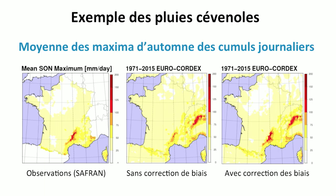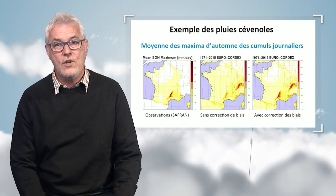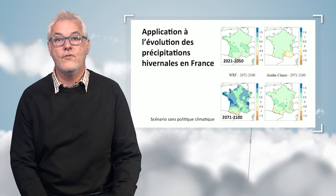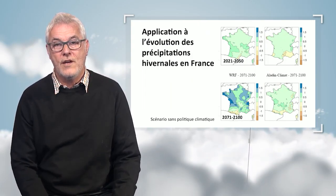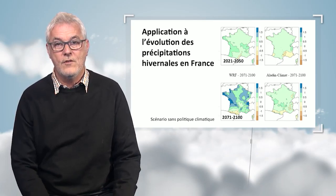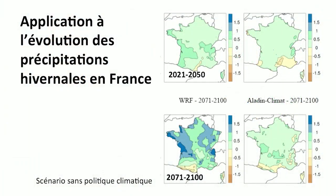Thanks to this technique, it is possible to achieve better simulation of extreme events. On the left-hand side map, we see an observation of autumn rains — the maximum cumulative rain for a given day in autumn. We see the Cévennes mountain area in red because this is an area where it rains a lot and rain is extremely intense; it can reach in one day the total amount of rain achieved in Paris over a year. The middle map shows the spatial structure, but the rain intensity is not well modeled — it shows about half of the rain normally observed. With the right-hand side picture and the bias correction, we really see the most intense rain being shown.